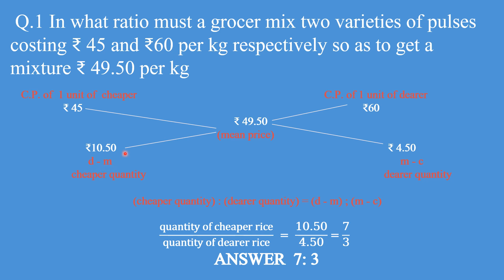Here we get D minus M, which gives the cheaper quantity: 60 minus 49.50 equals 10.50. And M minus C gives 49.50 minus 45 equals 4.50. The formula is: cheaper quantity to dearer quantity equals D minus M to M minus C. Putting in the values, the ratio comes out to be 10.50 upon 4.50 which is 7 upon 3. The answer is 7 is to 3 — very simple.